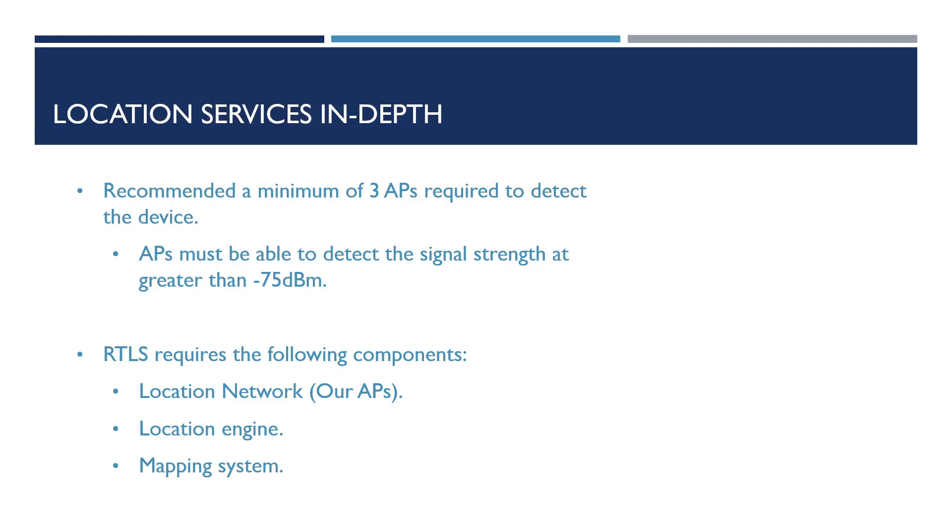First of all it's recommended that we have a minimum of three access points that can detect devices across the indoor location. In addition to this, these APs must be able to detect the signal strength at greater than minus 75 dBm to be effective.